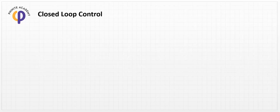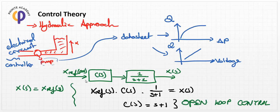In the previous lesson, we discussed how to apply open loop control to create a system dynamics model in hydraulic and mechanical approaches. The open loop control has a disadvantage: the absence of a measurement parameter, because we cannot be sure whether the position x is correct or not.